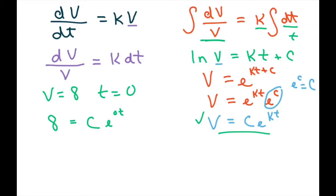Anything to the 0 power is just 1. So our C equals 8. And now plug it back in. So our C is 8. V equals 8 e to the kt power.